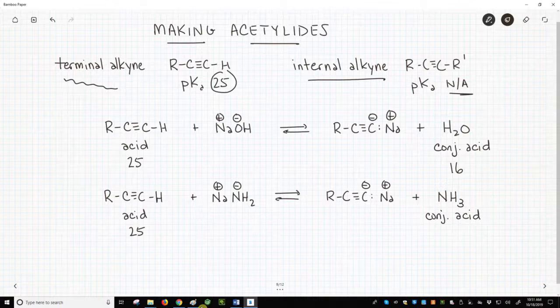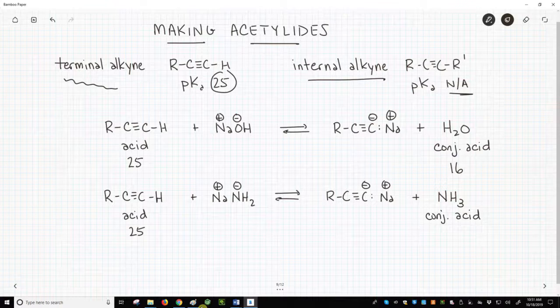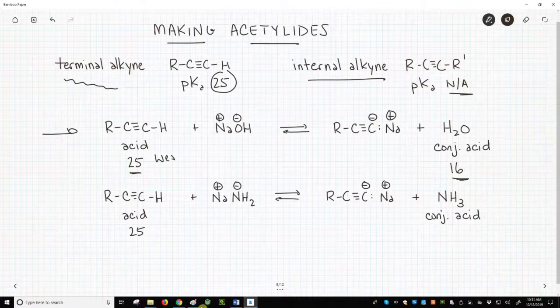While alkynes may be fairly acidic, they are not strongly acidic. They aren't acidic enough to be deprotonated by our standard strong base sodium hydroxide. Here is the equilibrium in the middle of the screen. Just looking at the pKa values of our acid ethyne, normally called acetylene, and the conjugate acid water, which is 16, the weaker acid is the alkyne.